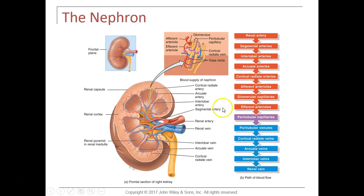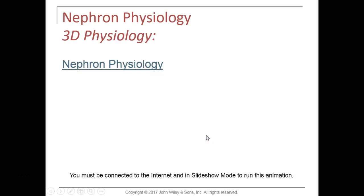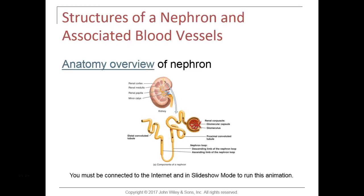You should know these blood vessels in order using the flow chart, and review the animations in the video. Now let's go over the structures of a nephron. Nephrons are the functional units in the kidney that allow it to regulate all aspects of the blood by producing either dilute or concentrated urine. Nephrons are made up of two main parts: the renal corpuscle and the renal tubule. The renal corpuscle is the circular structure containing the glomerular capillaries.